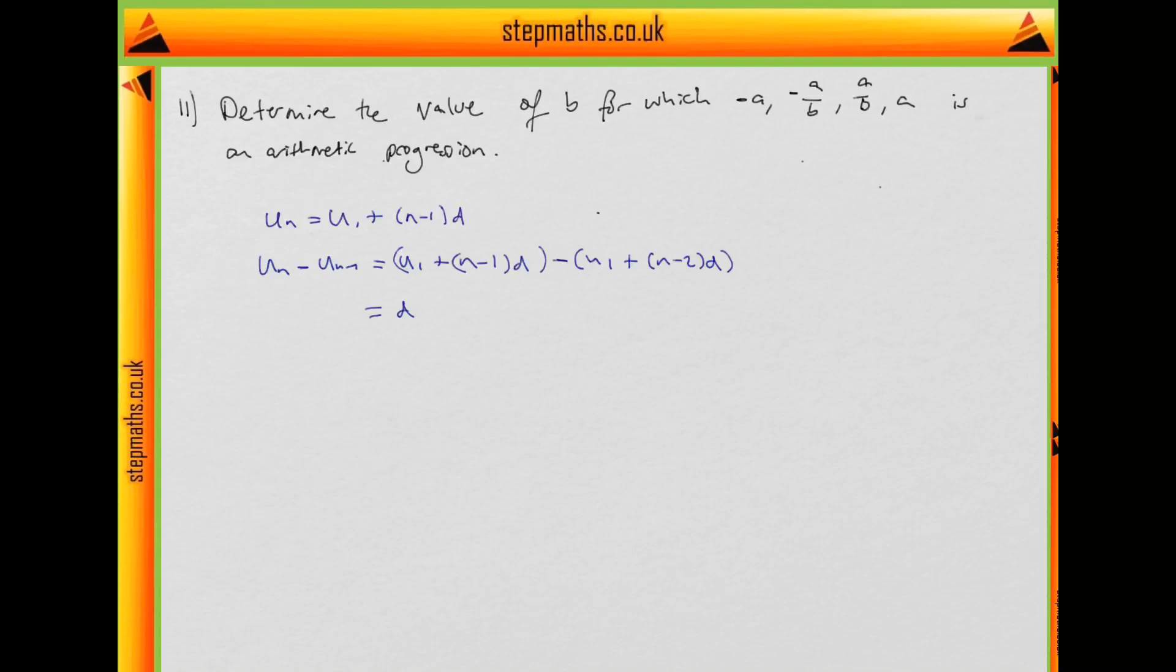So what we can say is that if we consider two consecutive terms here, i.e. this term and this term and this term and this term, their difference should be the same. So we can do that and then solve for b to make sure this holds.